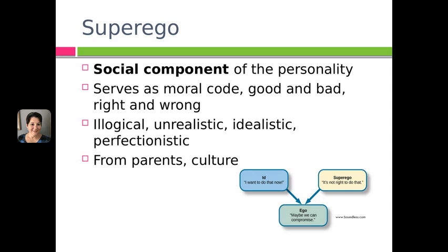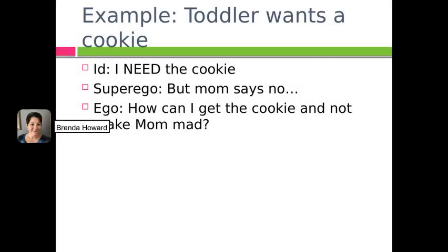The superego has been called our 'parent tapes' — the things we think our parents would say if we're behaving badly. Here's an example using a toddler who wants a cookie: the id says 'I need the cookie, I must have the cookie'; the superego says 'but mom says no, I shouldn't have a cookie before lunch'; and the ego says 'how can I get the cookie and not make mom mad?' — balancing the id and the superego.